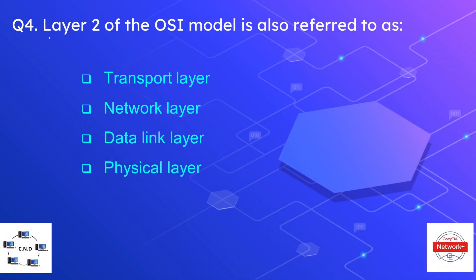Question number four is: layer two of the OSI model is also referred to as — options are transport, network, data link, and physical. The answer is data link layer. Data link layer is layer two, network is layer three, transport is layer four, and physical layer is layer one.